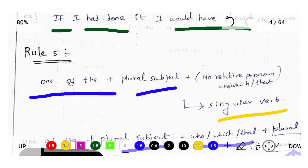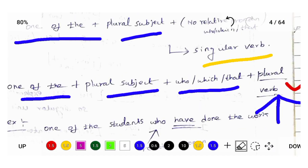So to summarize: 'one of the' followed by plural subject — the verb is singular form. 'One of the' followed by plural subject and then a relative pronoun — the verb should be in plural form.